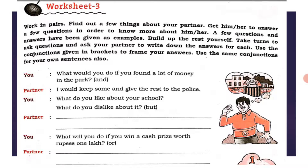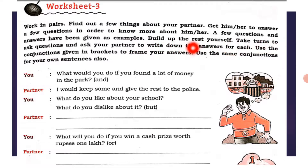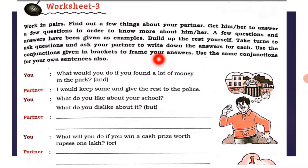Next we have Worksheet Three. Work in pairs — find out a few things about your partner. Get him or her to answer a few questions in order to know more about him or her. A few questions and answers have been given as examples. Build up the rest yourself. Take turns to ask questions and ask your partner to write down the answers.